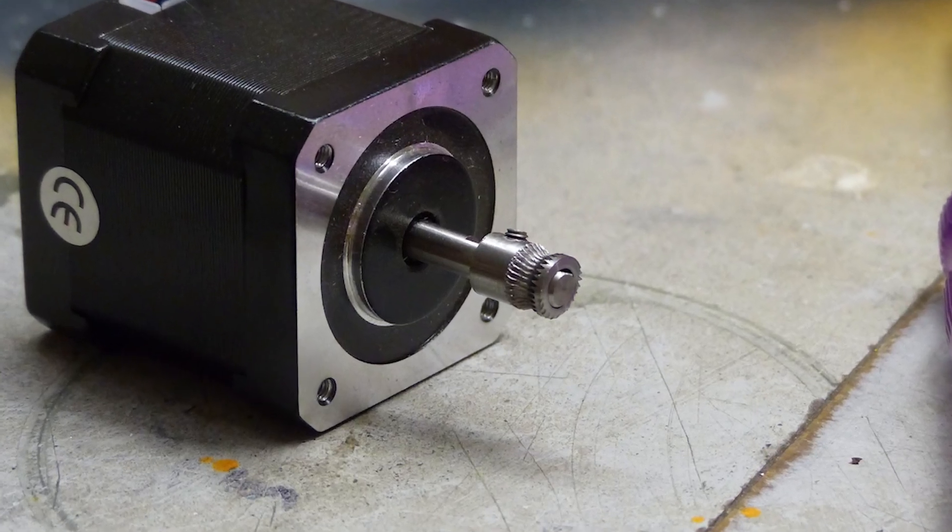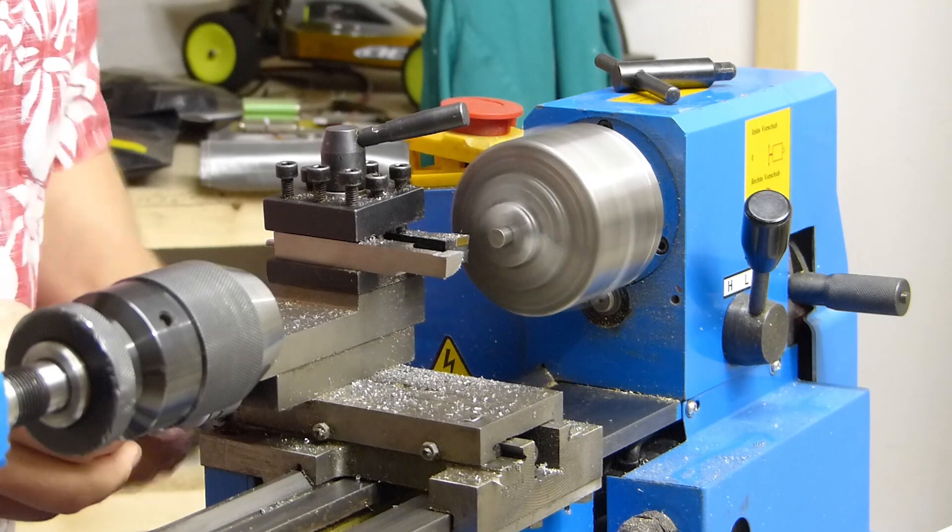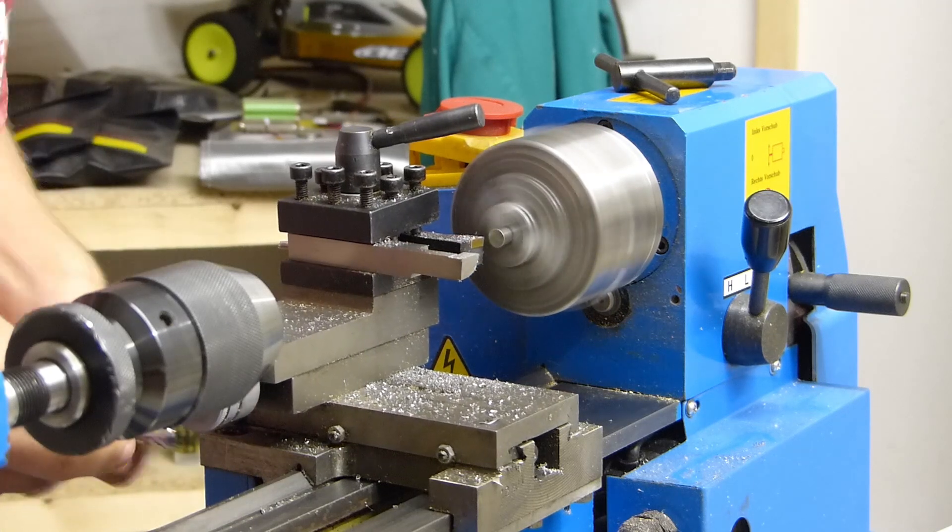I'm Tom and for this week's quick tips I'm going to show you how to make an MK8 hobbed bolt drive gear filament pulley that is used in direct drive extruders.